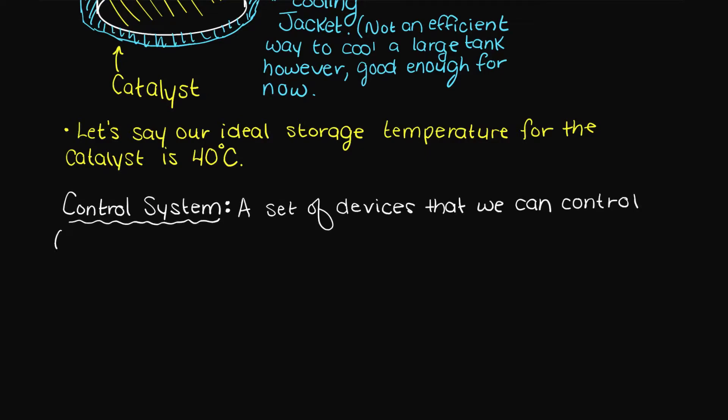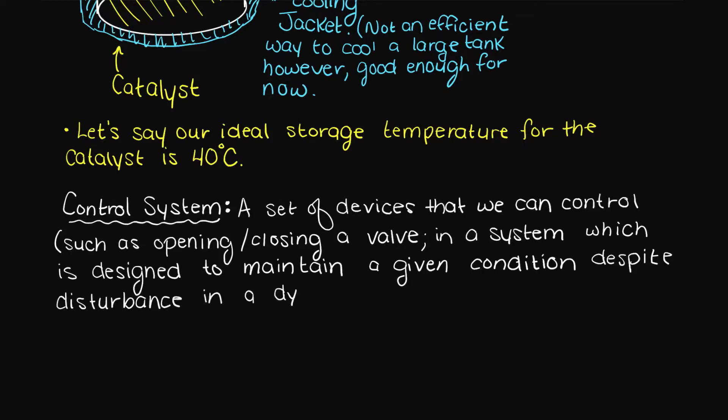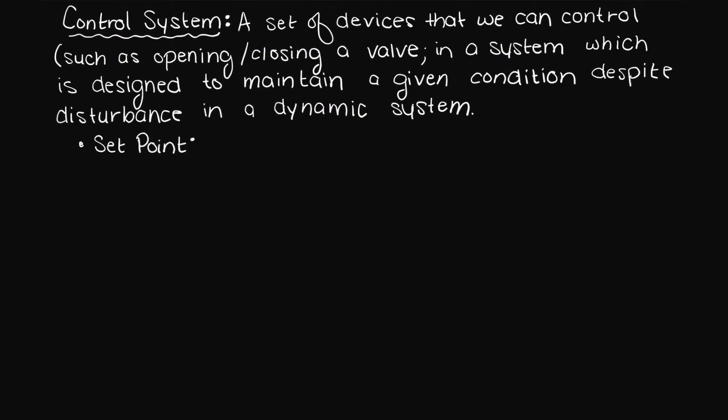A control system is a set of devices that we can control, such as opening or closing a valve, in a system which is designed to maintain a given condition despite disturbances in a dynamic or changing system.